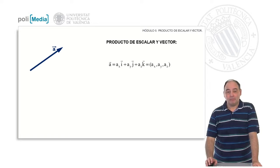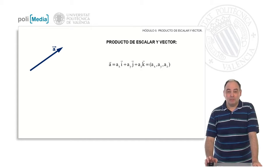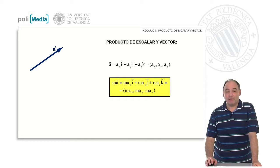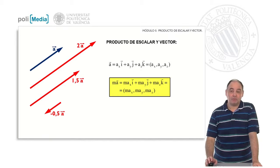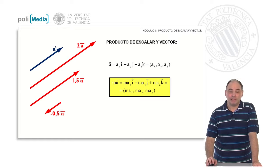As a third operation, we will talk about the scalar product of a number and a vector. Multiplying a vector by a number m consists of multiplying each of the components by that same number. For example, we see the vectors 2a, 1.5a, and minus 0.5a. The sense coincides with the original only when multiplying by a positive number; when multiplying by a negative number, the sense is inverted.